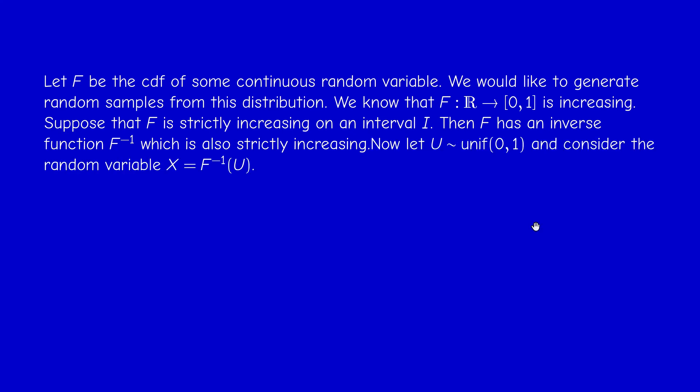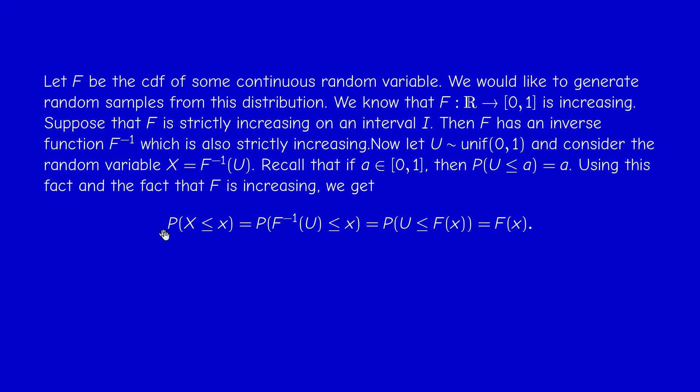If U is uniformly distributed on (0,1), we claim that F⁻¹(U) is a random variable which has CDF capital F. This is not difficult to prove, because since U is uniform on (0,1), the probability that U is less than or equal to a is simply a, for a between zero and one — as we already observed earlier.